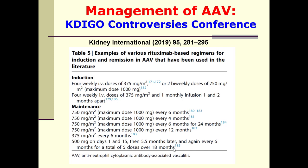Regarding rituximab regimens for induction in ANCA-associated vasculitis: four weekly IV doses of 375 mg/m², or two bi-weekly doses of 750 mg (maximum 1000 mg), or four weekly IV doses of 375 mg/m² plus one monthly infusion one and two months apart. For maintenance: 750 mg/m² (maximum 1 g) every 6 months, or 750 mg/m² (maximum 1 g) every 4 months for 24 months.